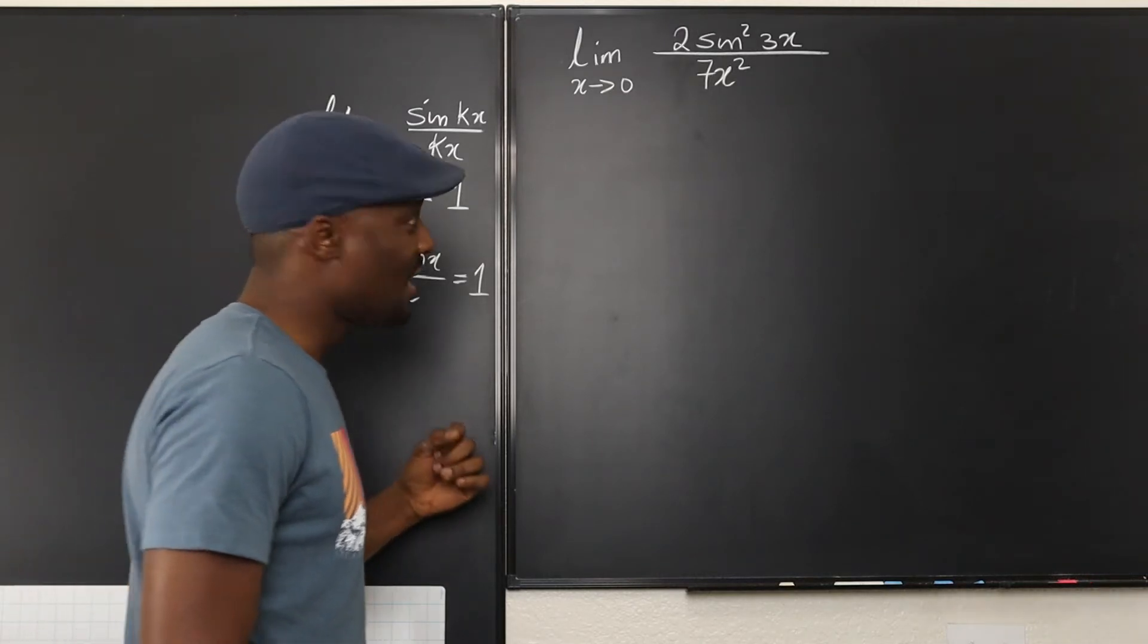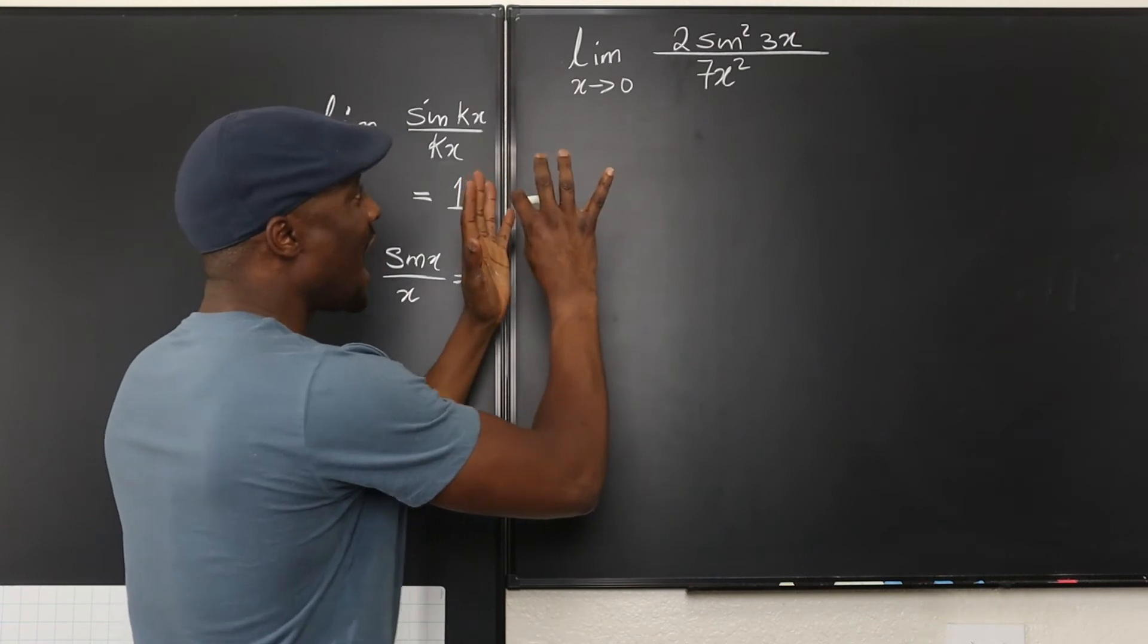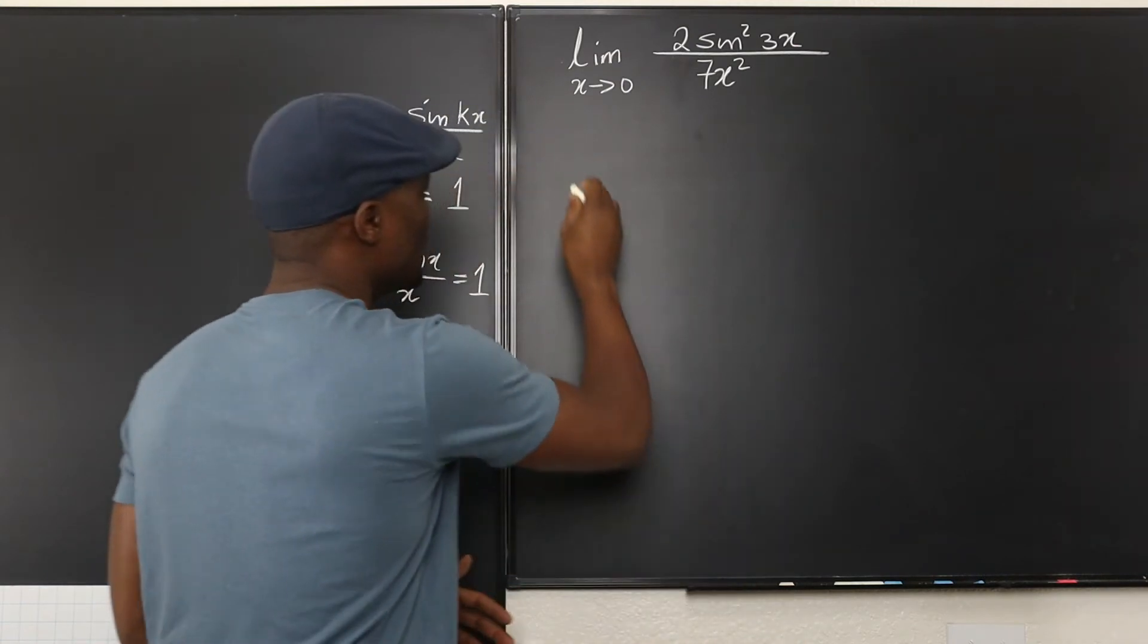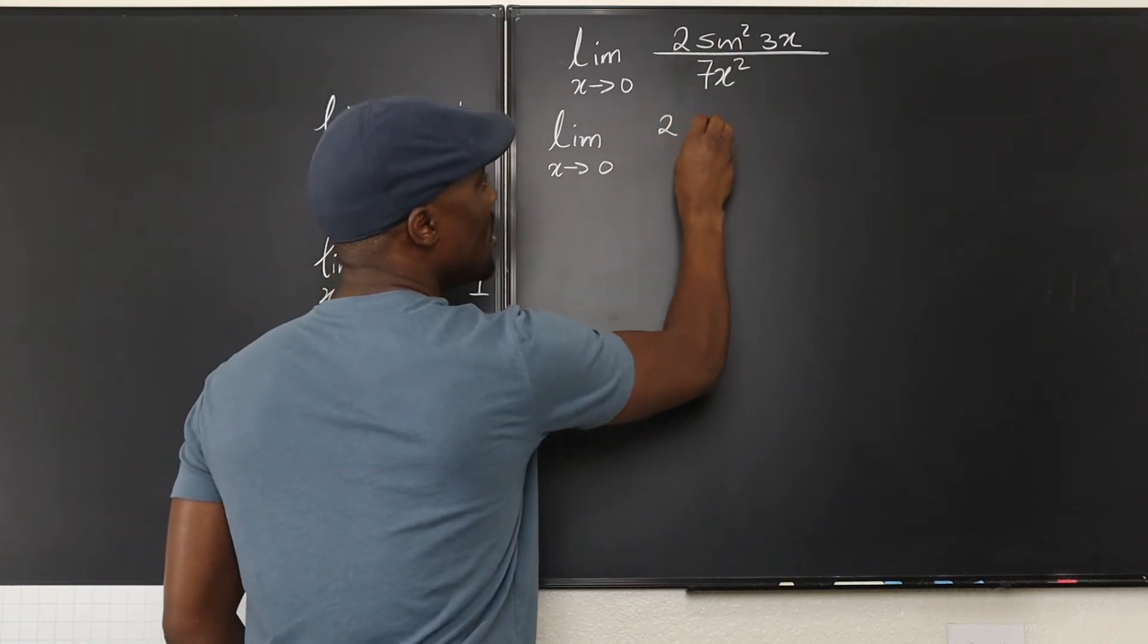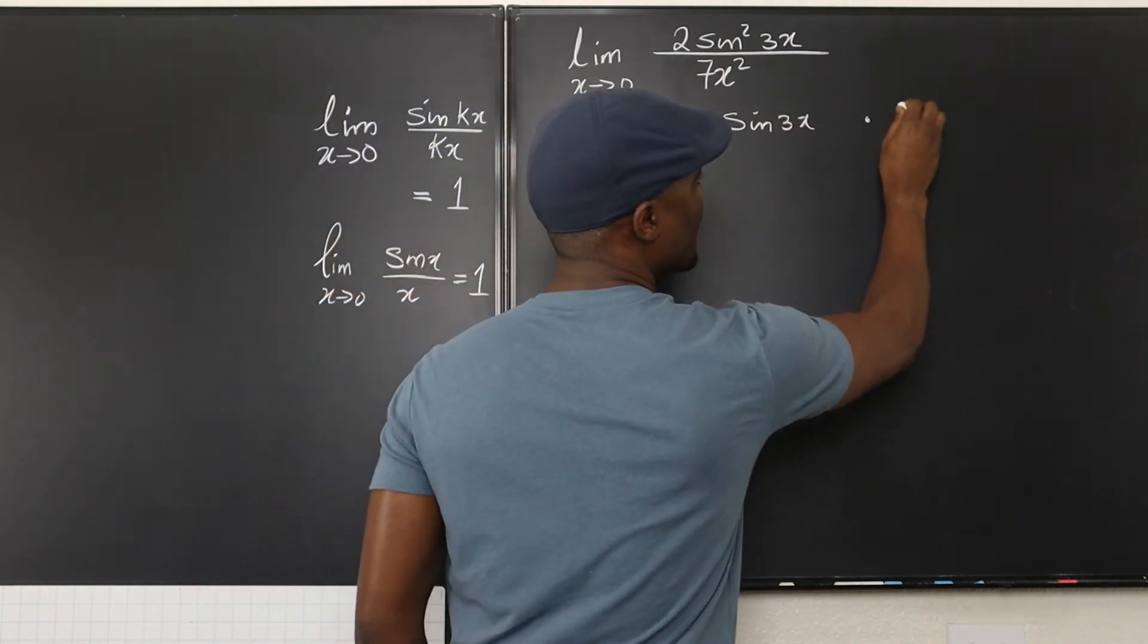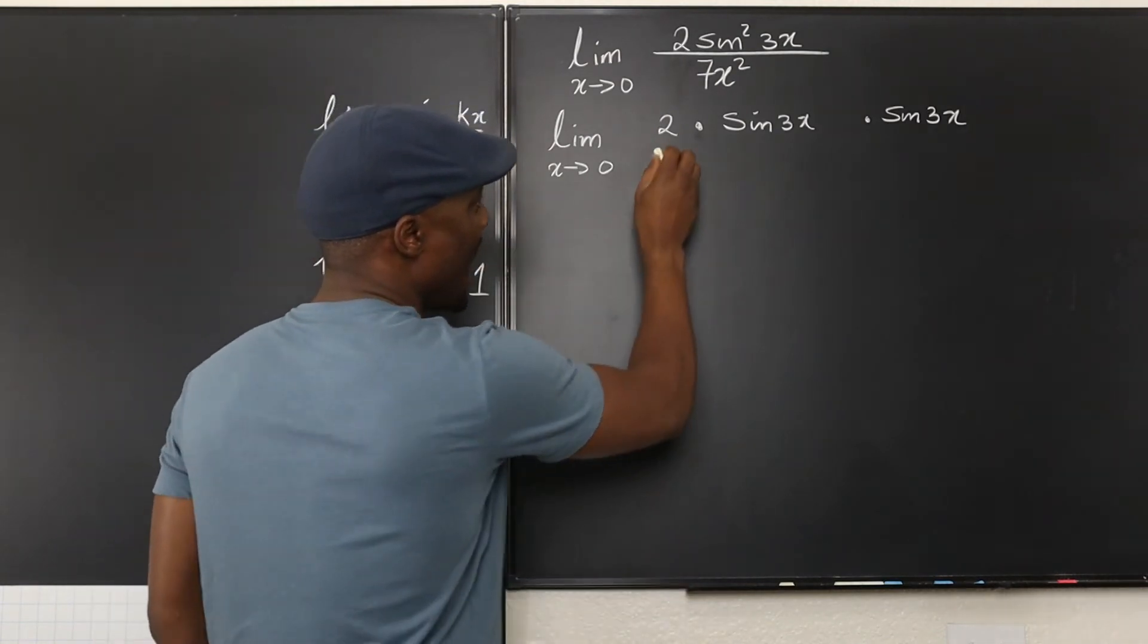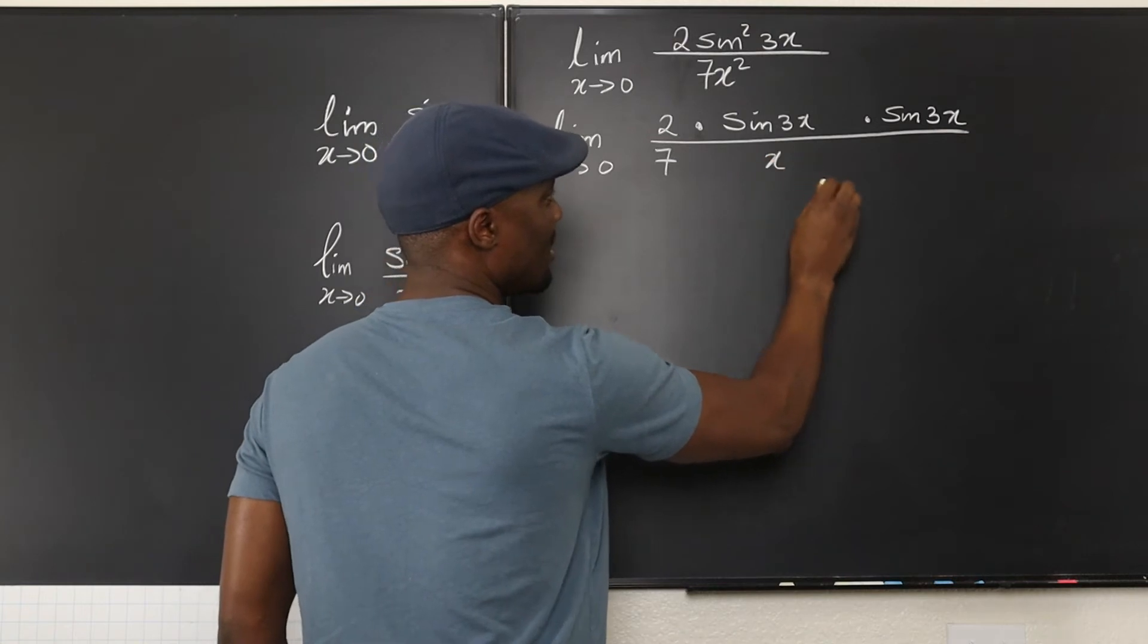This is what we do. We're going to create something. So I am going to split the sine squared 3x into two separate expressions. Watch me. The limit as x approaches 0. Now, I'm going to write this as 2 multiplied by sine 3x multiplied again by sine 3x. Yes, I haven't changed anything. And I'm going to write the bottom part as, just watch me, 7. I'm going to write x here and write x here.